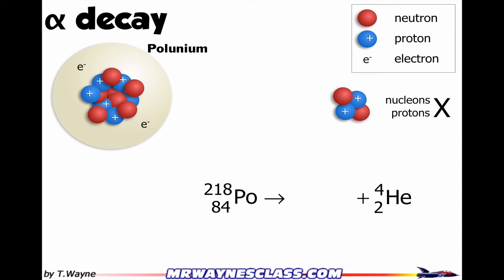Now I just need to balance this. I'll start by looking at conservation of mass. If I look at the top numbers, I have 218 AMUs, or 218 nucleons. And that's equal to four AMUs, or four nucleons, plus something. So what plus four equals 218? Something with 214 nucleons, or a mass of 214 AMUs.